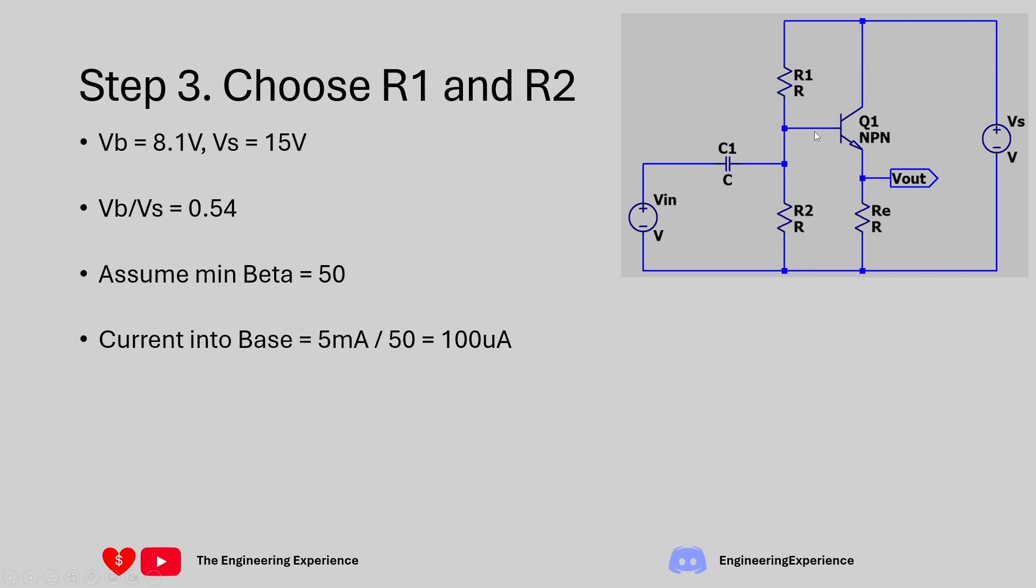If we assume our beta is 50 for this transistor or its minimum value, then we can calculate the current going into the base as 5 milliamps which is the quiescent current here divided by 50. That gives us a current into the base of 100 microamps.